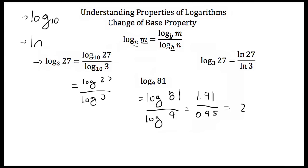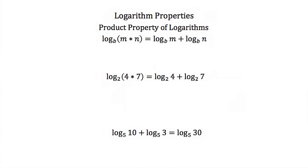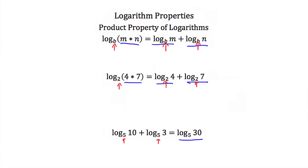The product property of logarithms states that if we have the log of two numbers multiplied together, in this case m and n, that's equal to the log of m plus the log of n, as long as we have the same base throughout the expression. For example, the log base 2 of 4 times 7 equals the log base 2 of 4 plus the log base 2 of 7. This works in the other direction as well: the log base 5 of 10 plus the log base 5 of 3 equals the log base 5 of 30.